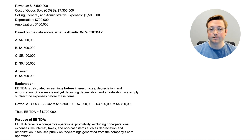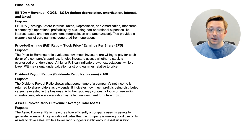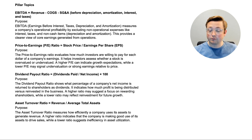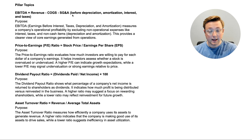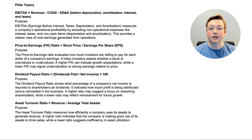Here are the pillar topics for this video. EBITDA: you can calculate it two ways — either revenue minus COGS minus SG&A (working from the top), or net income plus depreciation, amortization, interest, and taxes (adding back from net income). Both get you to EBITDA. Its purpose: measures a company's operational profitability by excluding non-operational expenses like interest and taxes, and non-cash items like depreciation and amortization, providing a clearer view of core earnings from operations.